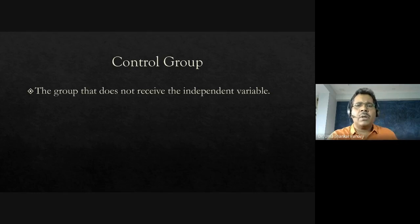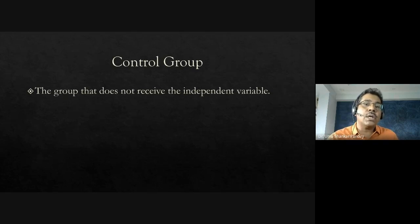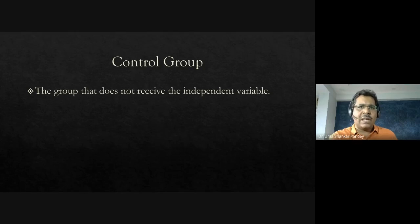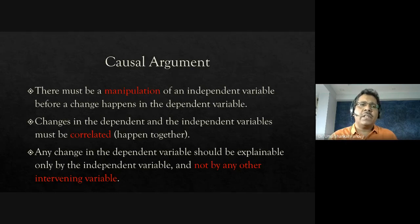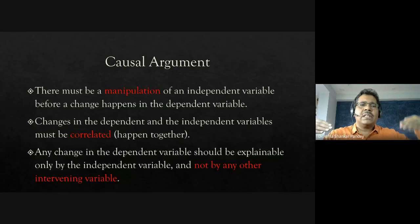In a clinical example, the experimental group receives the medicine while the control group may receive a placebo, so they don't know whether they've been given the medicine or not. In a true experimental design, you must have both the experimental group and the control group. We also have to manipulate the independent variable before changes happen in the dependent variable, and these changes must be correlated.